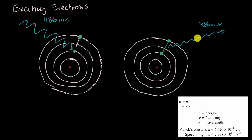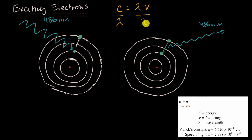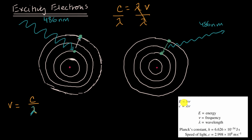So how do we figure out the energy of one photon of 486 nanometer light? First, we figure out its frequency using C equals lambda times nu. We know that the speed of light equals the wavelength of the light times the frequency. Dividing both sides by lambda, the frequency equals the speed of light divided by the wavelength. The wavelength is 486 nanometers. We can then plug this back into Planck's equation — energy equals Planck's constant times frequency — to figure out the energy.